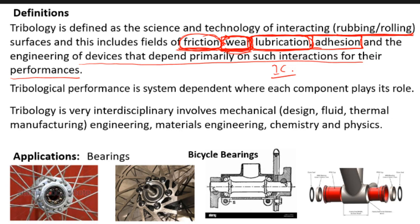Tribological performance is system dependent, where each component plays its role. We cannot simply say 'I have two steels and the friction is this and wear is this, so we can do the design,' because other factors decide friction and wear properties — such as what load is applied, what is the relative speed, and what is the level of vibration in the system. For example, if it is part of a transportation system, vibration will be high; if it is a ground system, vibration will be low.